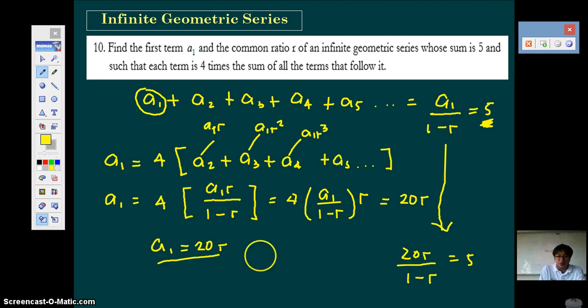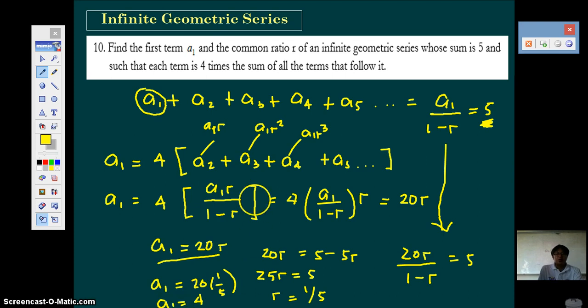So solving this simple equation, you get 20r is equal to 5 minus 5r, and 25r is 5, so r equals 5 over 25 or simply 1 over 5. So if r is 1 fifth, then a1 is 20r, that's 20 times 1 fifth, which equals 4. So we have the first term 4 and the common ratio 1 fifth.